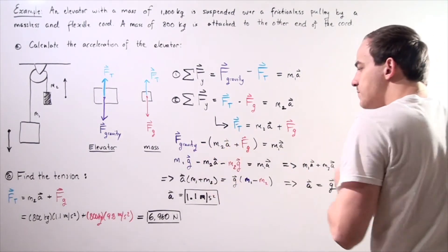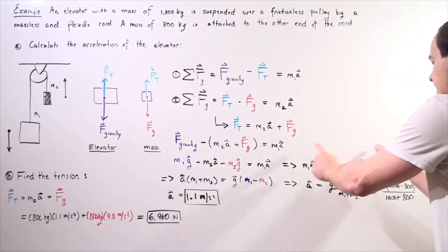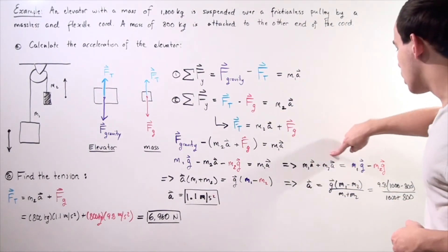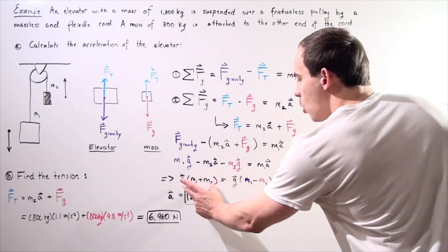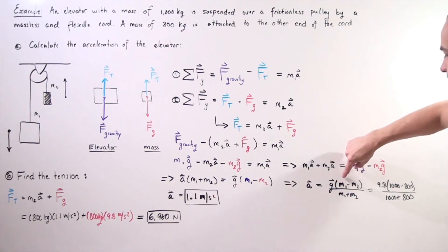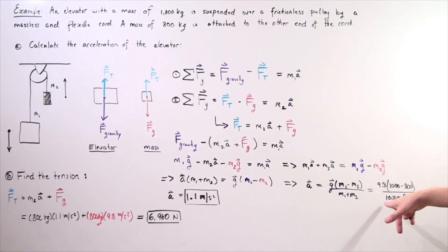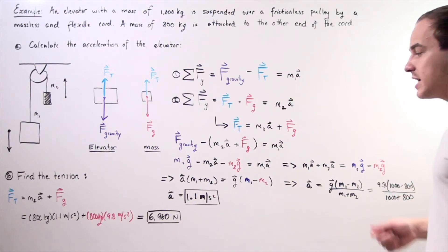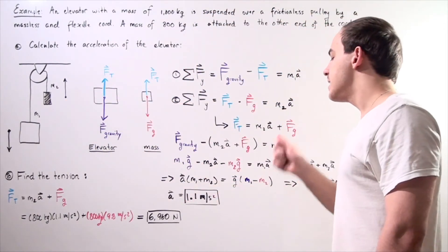After substituting, we distribute the negative sign, collect A terms on one side and gravitational terms on the other, and factor out A and G. This gives the acceleration: A equals G times (M1 minus M2) divided by (M1 plus M2). Plugging in values — 9.8 times (1,000 minus 800) divided by (1,000 plus 800) — we get an acceleration of 1.1 meters per second squared.